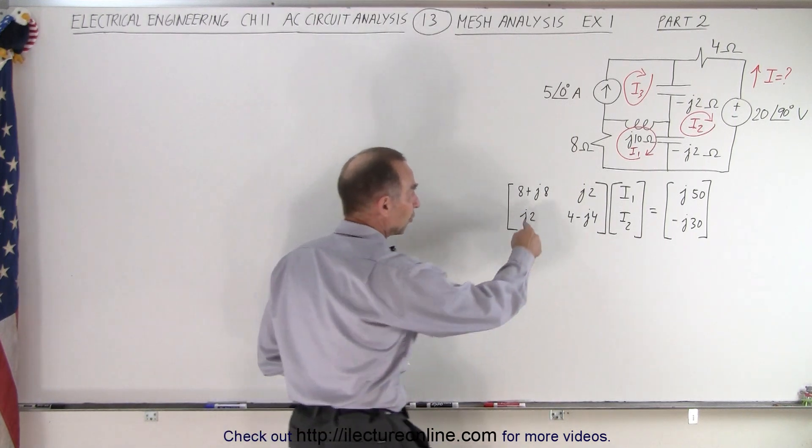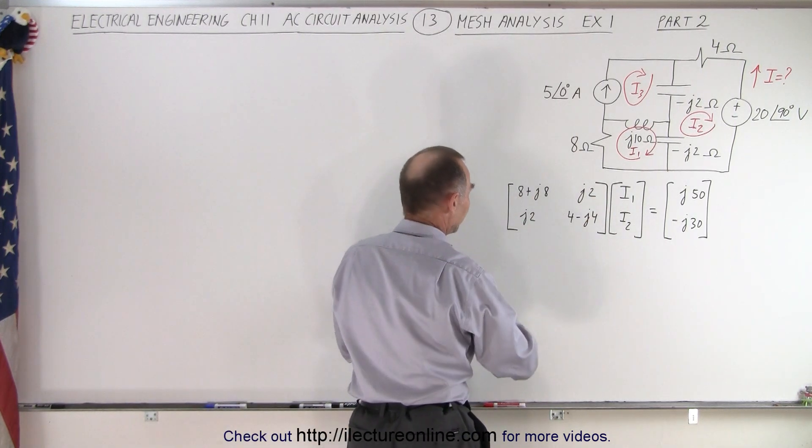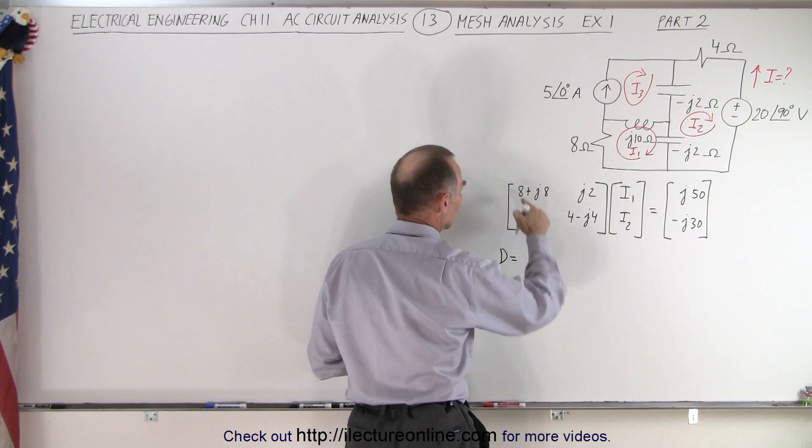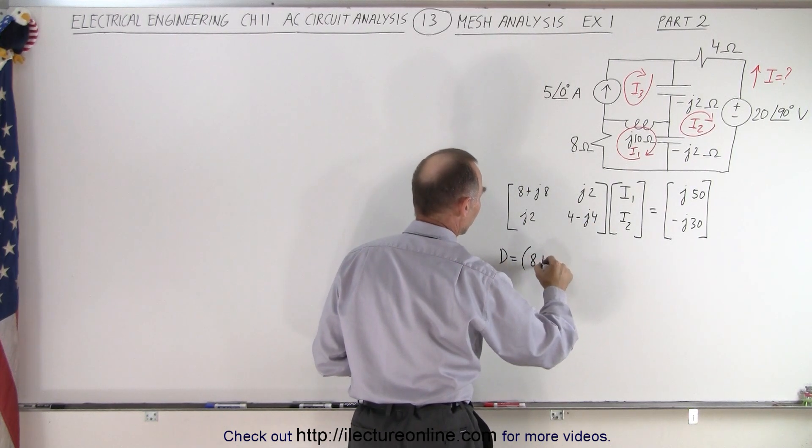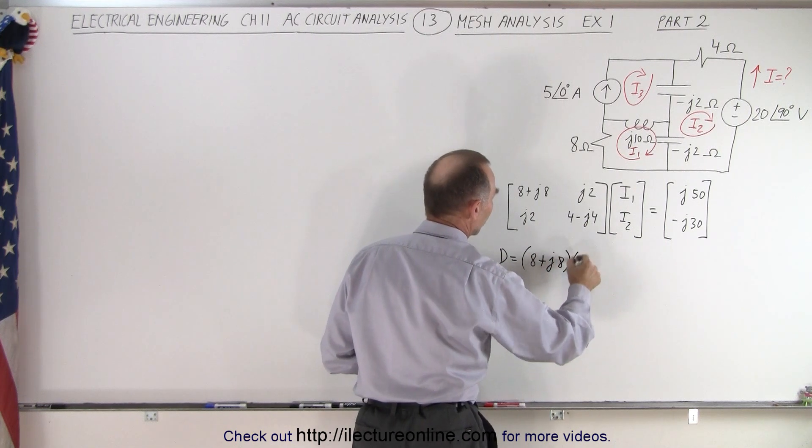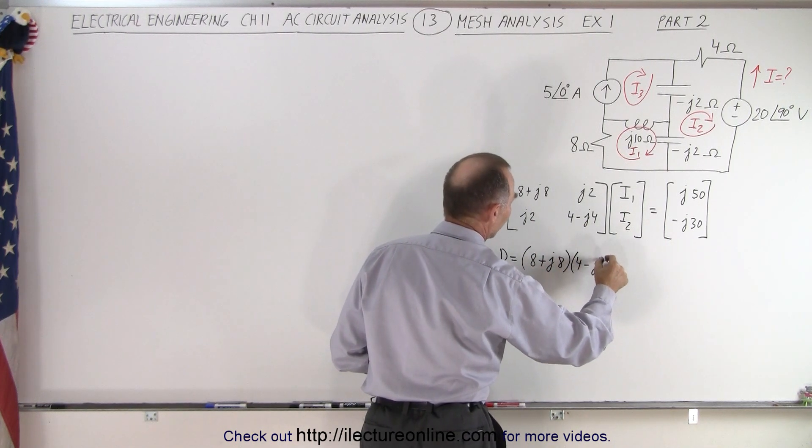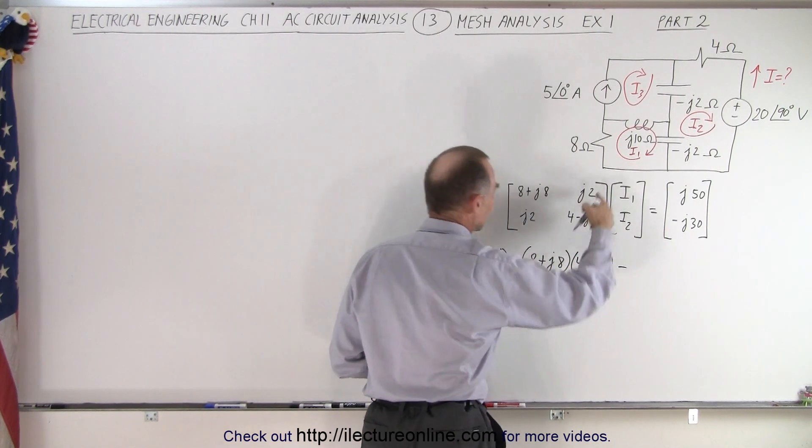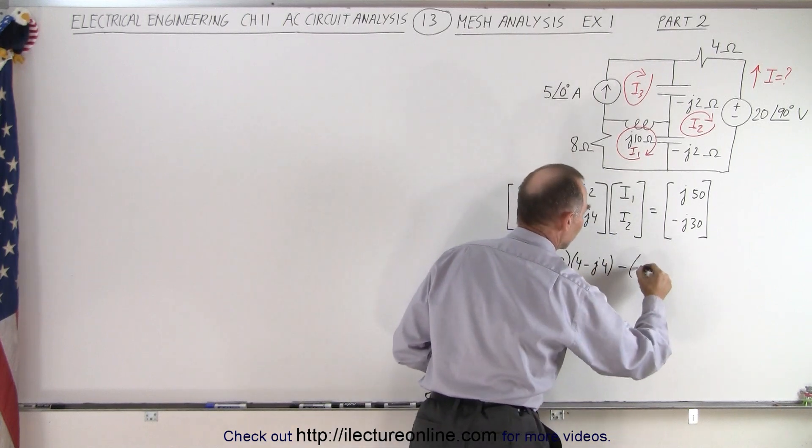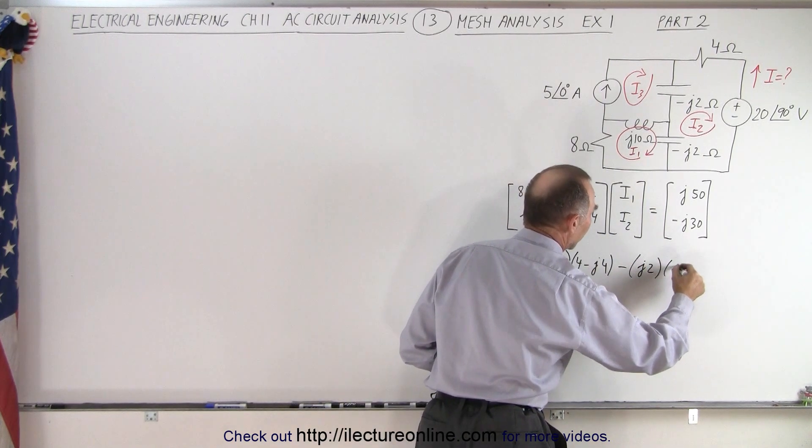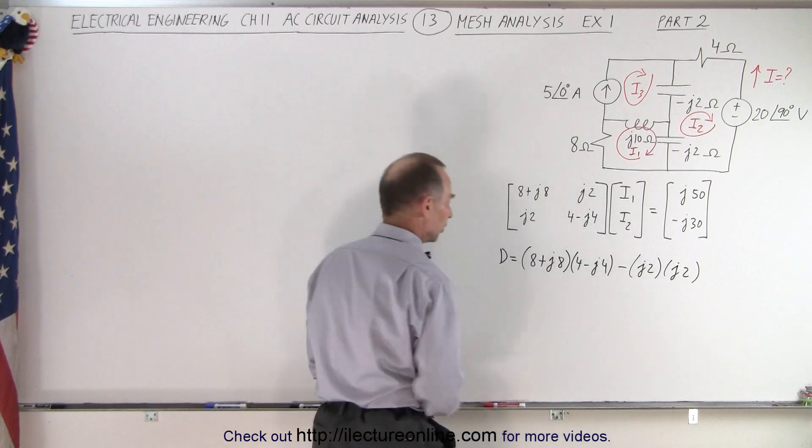So first we're going to solve this right here, the determinant of this, d, is going to be equal to the product of those two which is essentially 8 plus j8 multiplied times 4 minus j4 and now we subtract from that the product of these two which is j2 multiplied times j2. So that's our determinant.